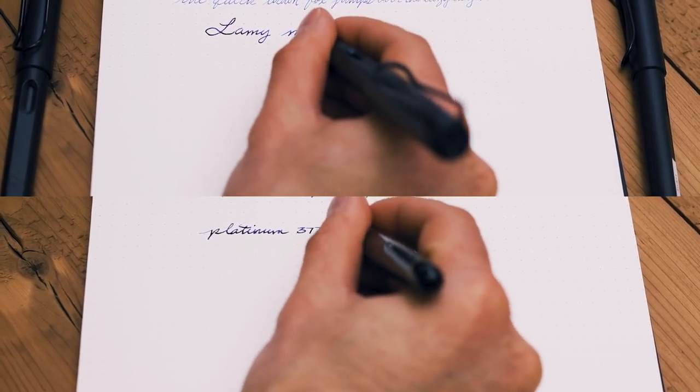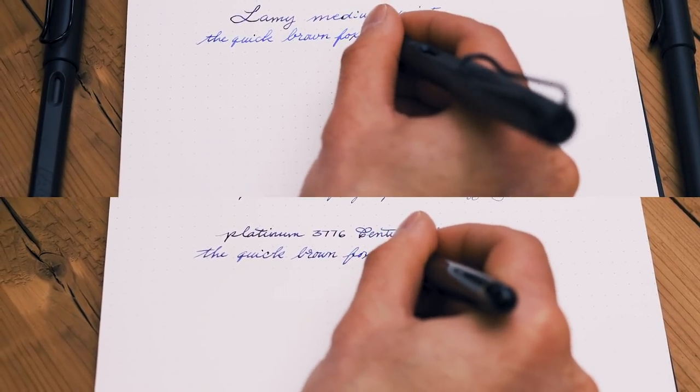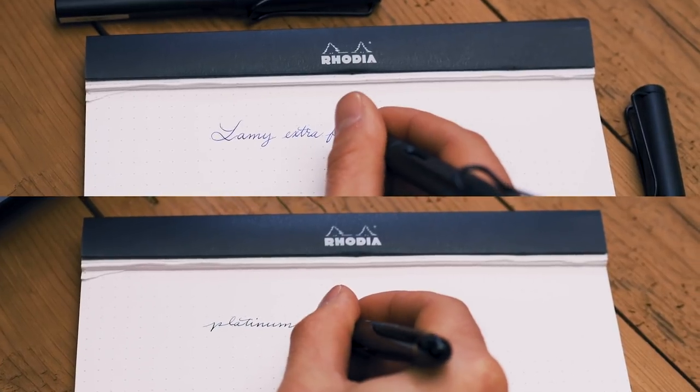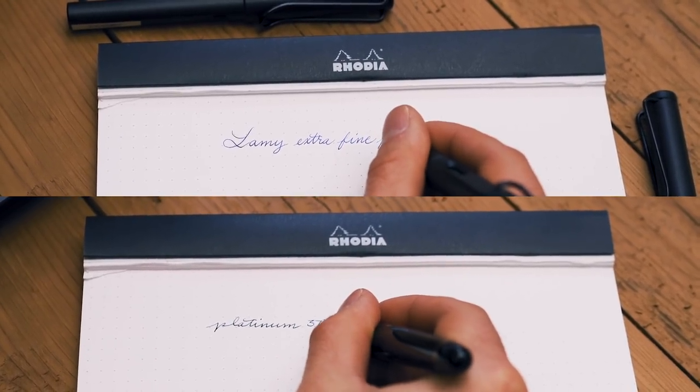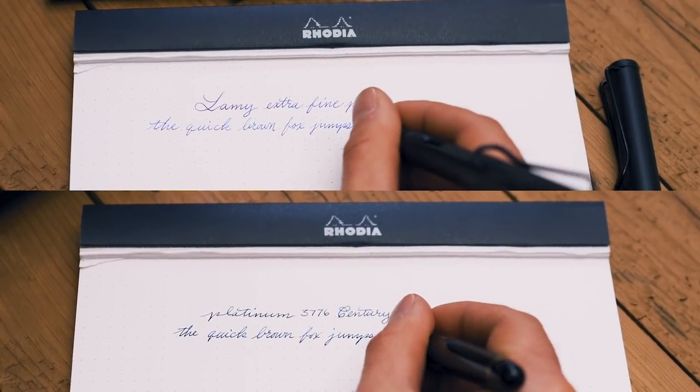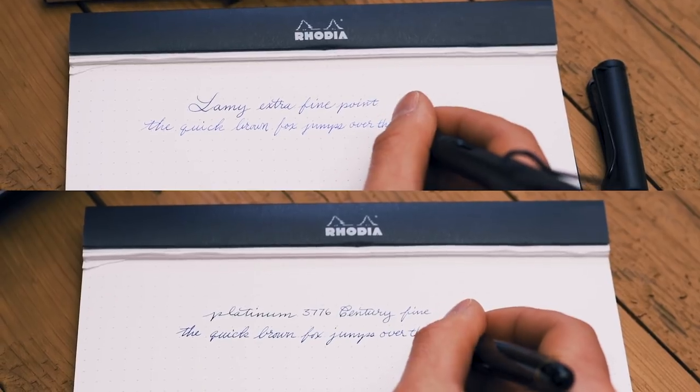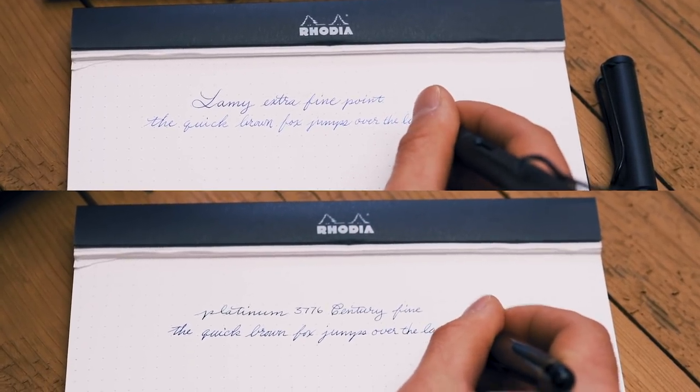If a Western extra fine is more your speed, then you have your pick of Platinum's fine or several degrees finer. The trade-off of going finer is the additional feedback, which some writers might characterize as being scratchy. Platinum nibs are not considered to be buttery smooth, but a smoother writing experience can be found in the larger nib grades.